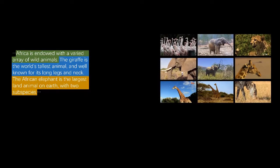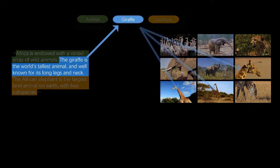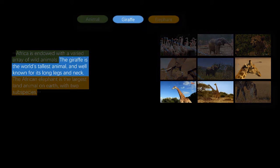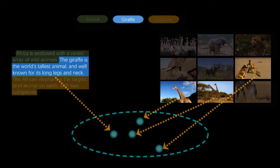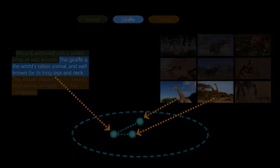The first step retrieves shots from the repository by keyword matching. Next, the retrieved shots and the text segment are embedded into a visual semantic feature space to compute the similarity score. Top ranked shots are returned as candidates for the video montage of the segment.